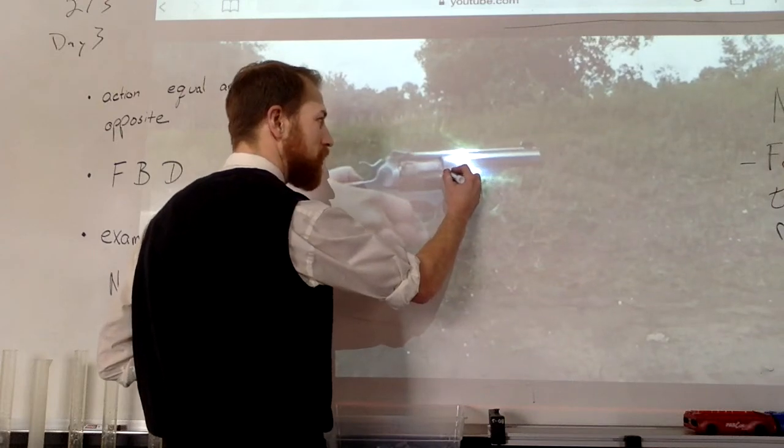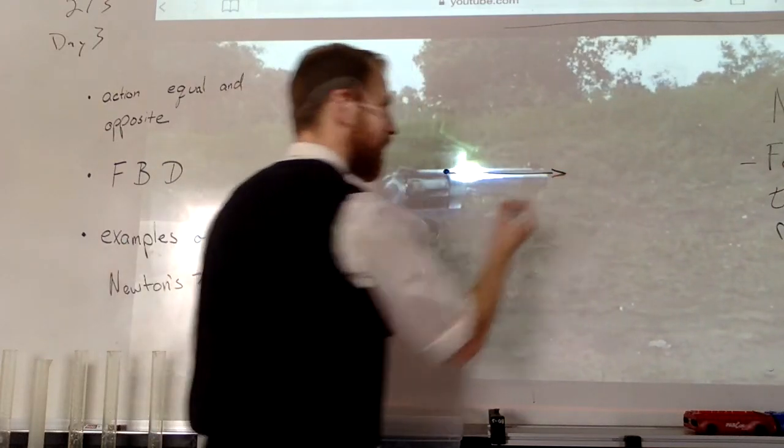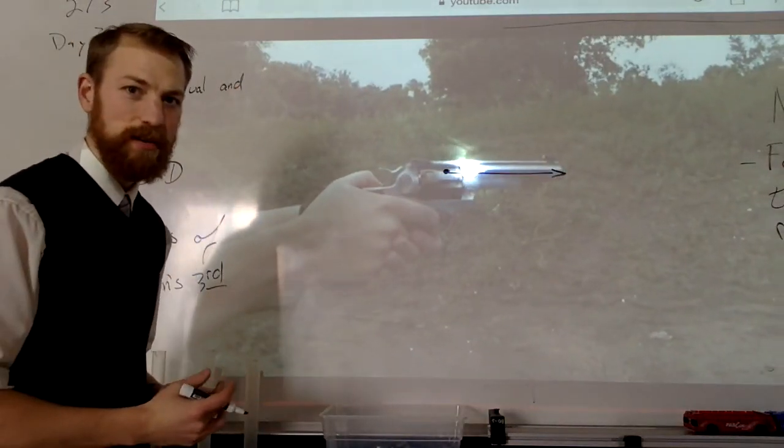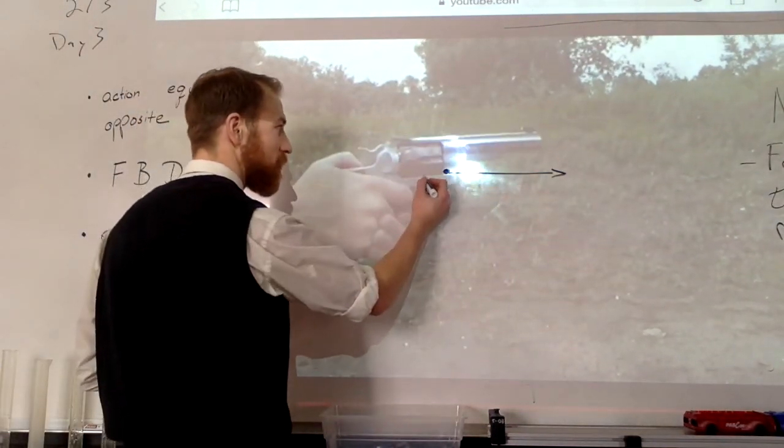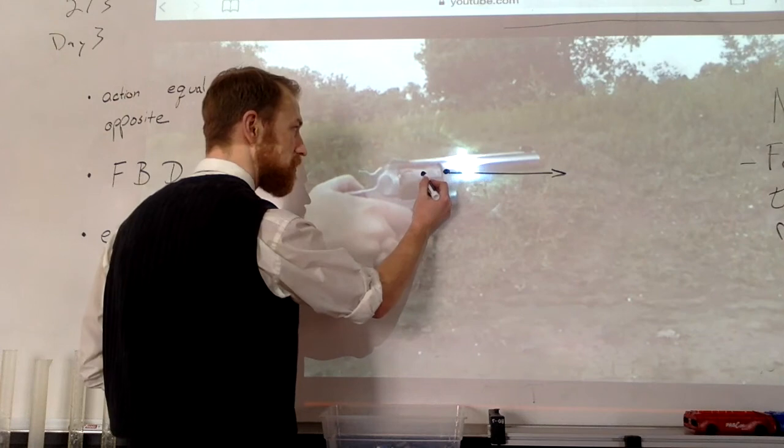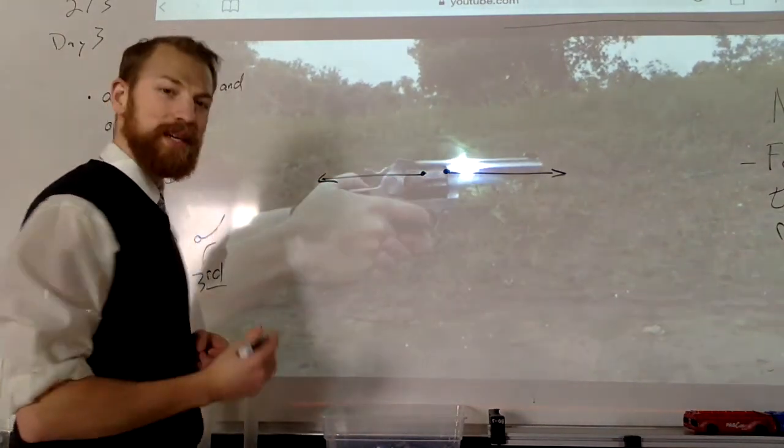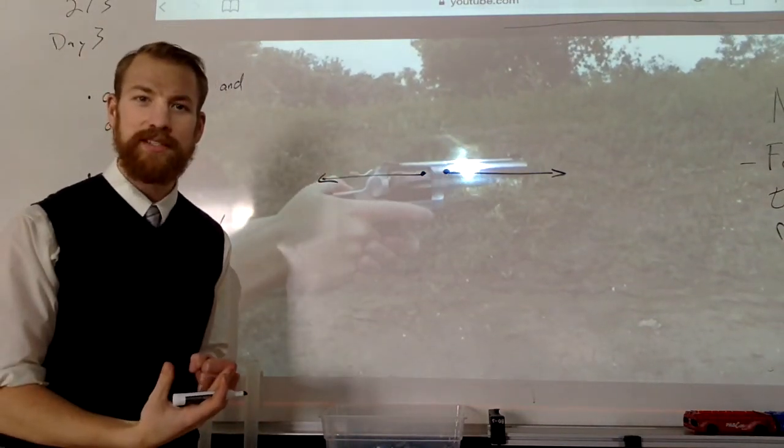The bullet is given a force in this direction, a lot of force. So the bullet travels really fast out of the gun. What happens to the gun? The gun is kicked back with an equal and opposite force. Recoil on a gun is a perfect example of Newton's third law.